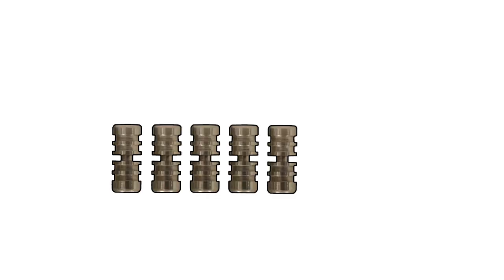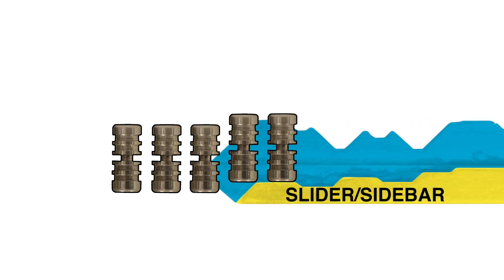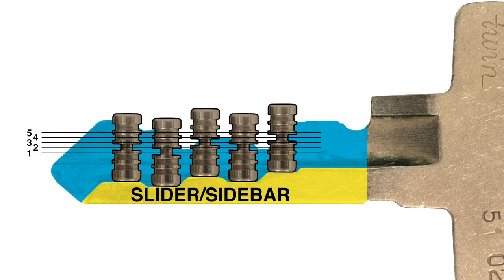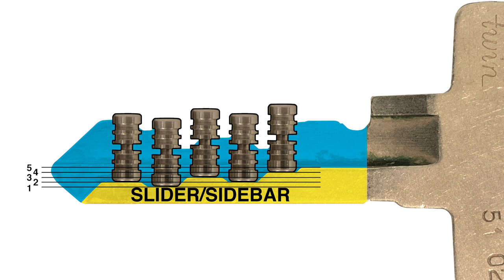The second mechanism is a very special 5-slider sidebar mechanism. All the sliders which ASSA calls side pins are the same and are lifted to 1 of 5 heights by their matching cuts on the key.